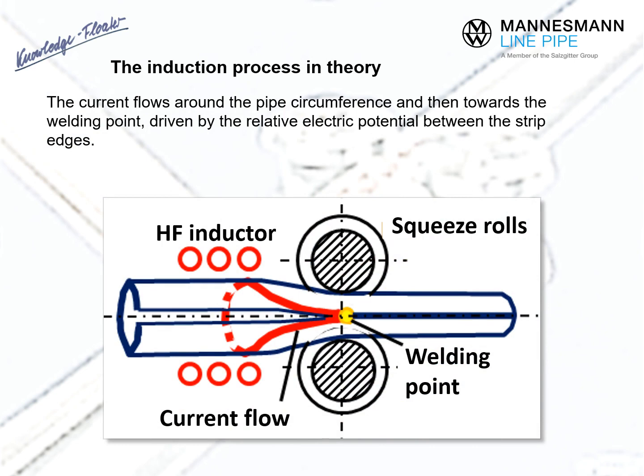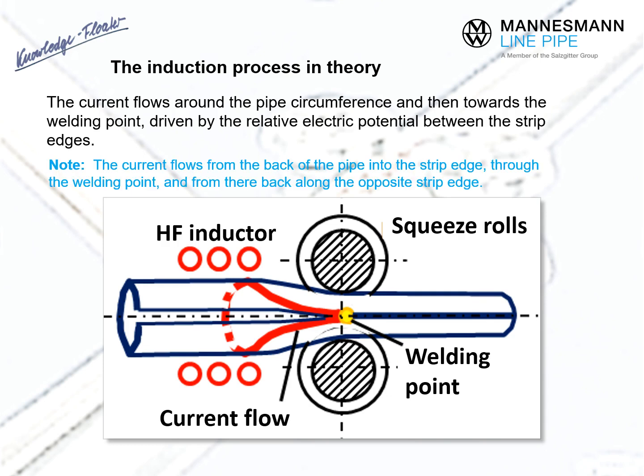Let's take a look at the theory behind inductive heat input. The eddy current generated in the pipe by the inductor coil always seeks out the shortest path to form a circuit. Accordingly, it flows around the back of the pipe into one strip edge and along that strip edge towards the welding point. From there, it flows back towards its starting point. The high frequency alternating current flows around the pipe circumference until it reaches one strip edge and then back along the opposite strip edge.